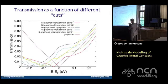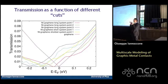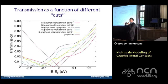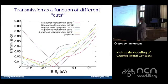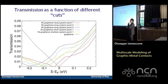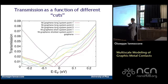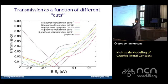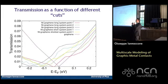Here we see the transmission coefficient as a function of energy, where the different curves correspond to different cut points of the graphene — different points of insertion of the semi-infinite graphene lead. The curves are very different. To compute the conductance using the Landauer formula, we integrate the transmission coefficient around the Fermi energy, and the result depends strongly on which curve we choose, meaning on where we cut.